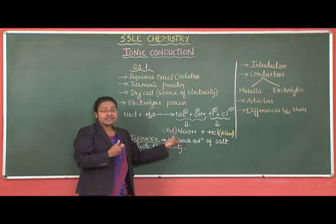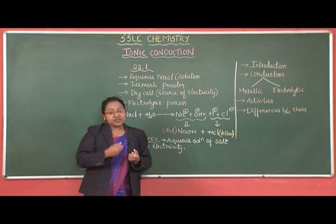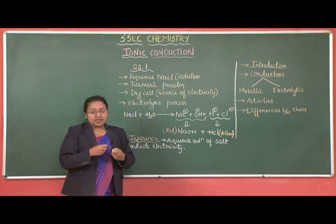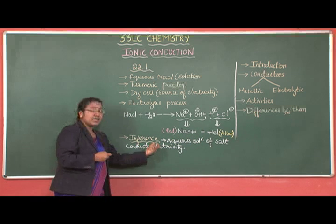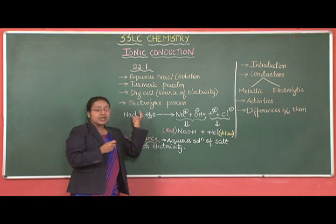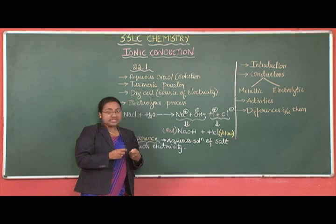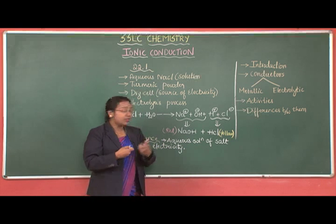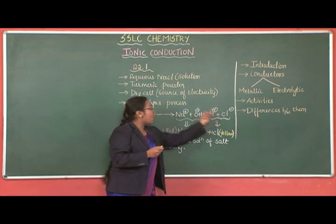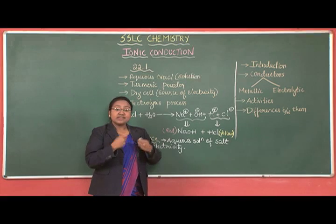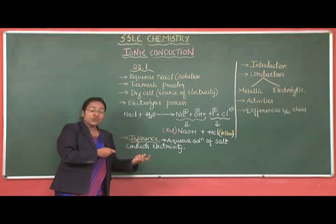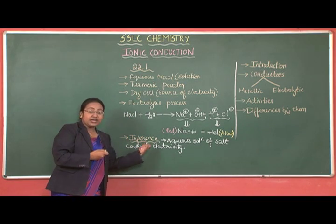This is the observation from this experiment. The overall inference is: this experiment clearly reveals that an aqueous solution of salt conducts electricity. NaCl dissolved in water gives an aqueous condition that conducts electricity due to the flow of ions — Na⁺, OH⁻, H⁺, and Cl⁻. Due to the flow of these ions, conduction of current is possible. These conductors are called electrolytic conductors, and the process is known as electrolytic conduction.